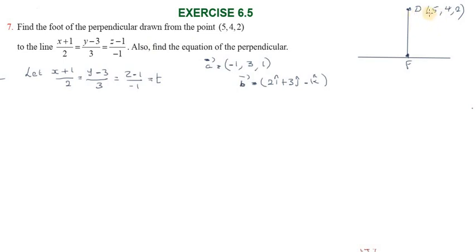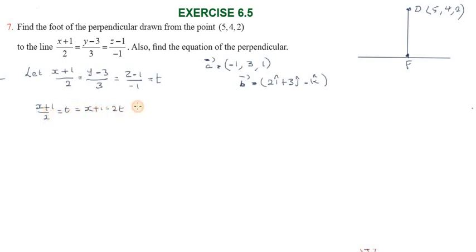One given point is (5, 4, 2), and we need to find the foot of the perpendicular on the line. Let the Cartesian equation equal parameter t. So (x+1)/2 = t, giving x+1 = 2t, so x = 2t − 1. Similarly, y = 3t + 3 and z = −t + 1.